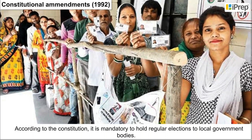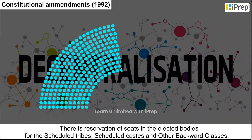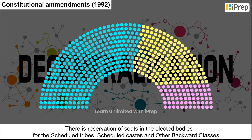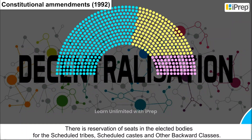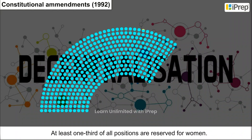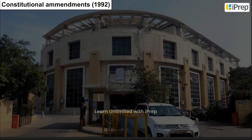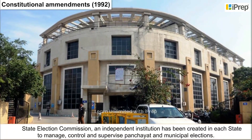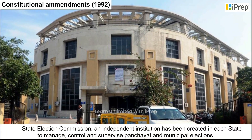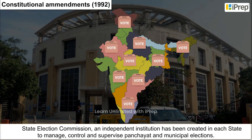According to the constitution, it is mandatory to hold regular elections to local government bodies. There is reservation of seats in the elected bodies for Scheduled Tribes, Scheduled Castes, and Other Backward Classes. At least one-third of all positions are reserved for women. A State Election Commission, an independent institution, has been created in each state to manage, control, and supervise panchayat and municipal elections.